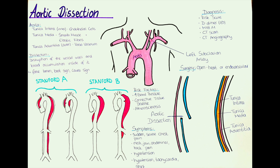The aorta has three major layers: the tunica intima, the tunica media, and the tunica adventitia. The tunica intima is a single cell layer of flat endothelial cells, so it is the innermost layer, while the tunica media is a quite thick layer which is comprised of smooth muscle cells as well as elastic fibers.